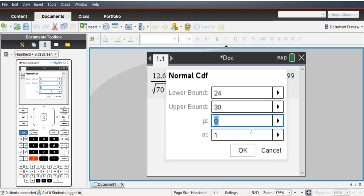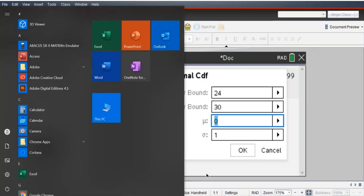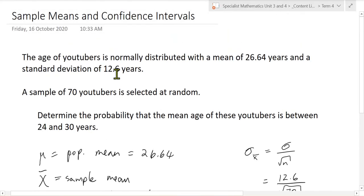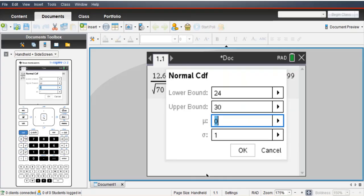Our mean, so you can see the little mu symbol. Question gave us that. It was 26.64. 26.64.